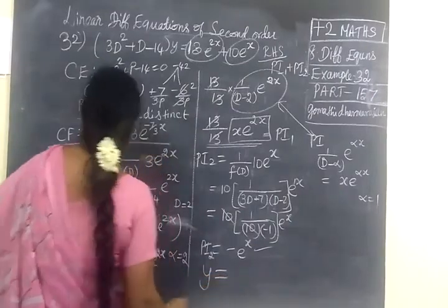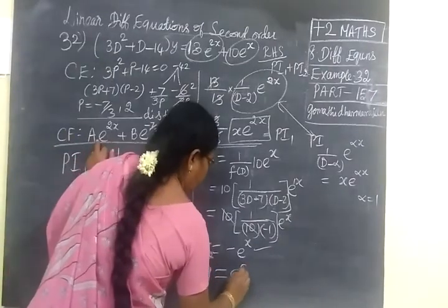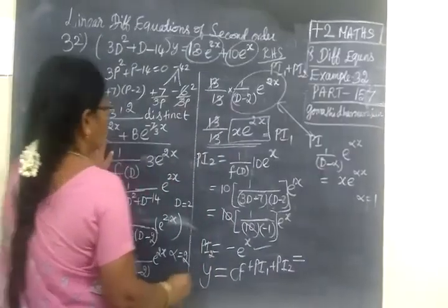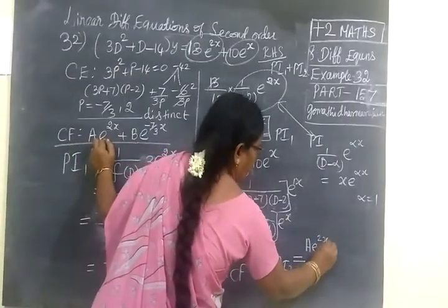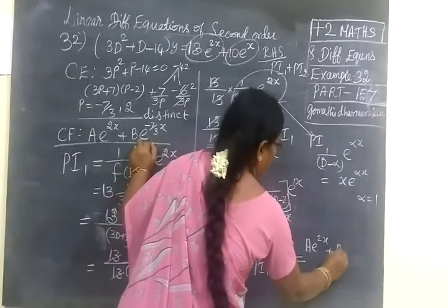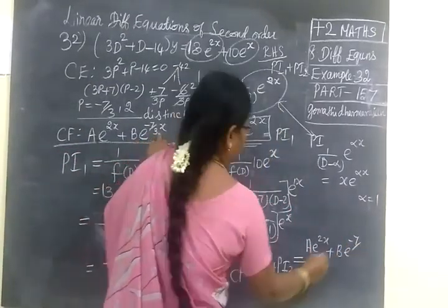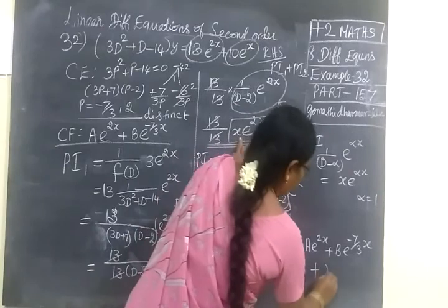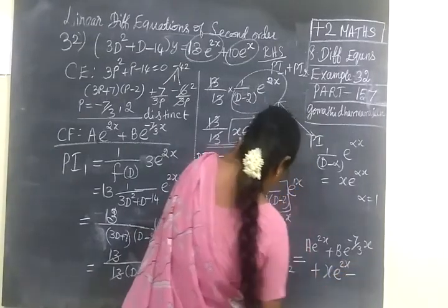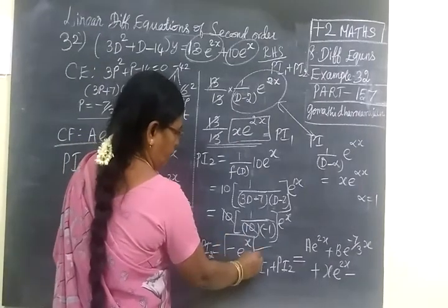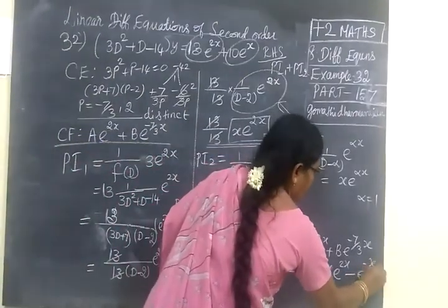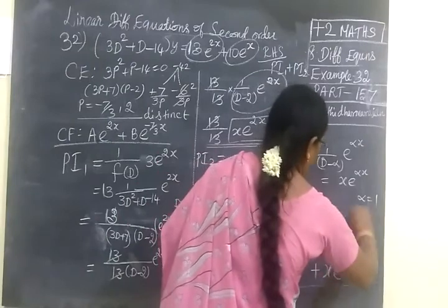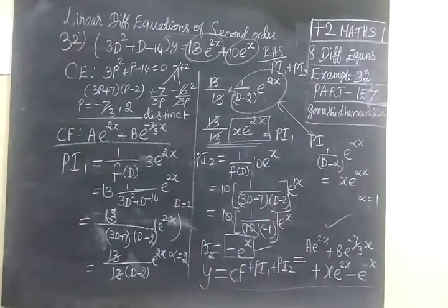So general solution: y equal to CF plus PI1 plus PI2. So equal to Ae^(2s) plus Be^(-7/3·s) plus PI1, which is x·e^(2s), minus PI2, which is e^s. So this is the answer, and this one is correct. Thank you.